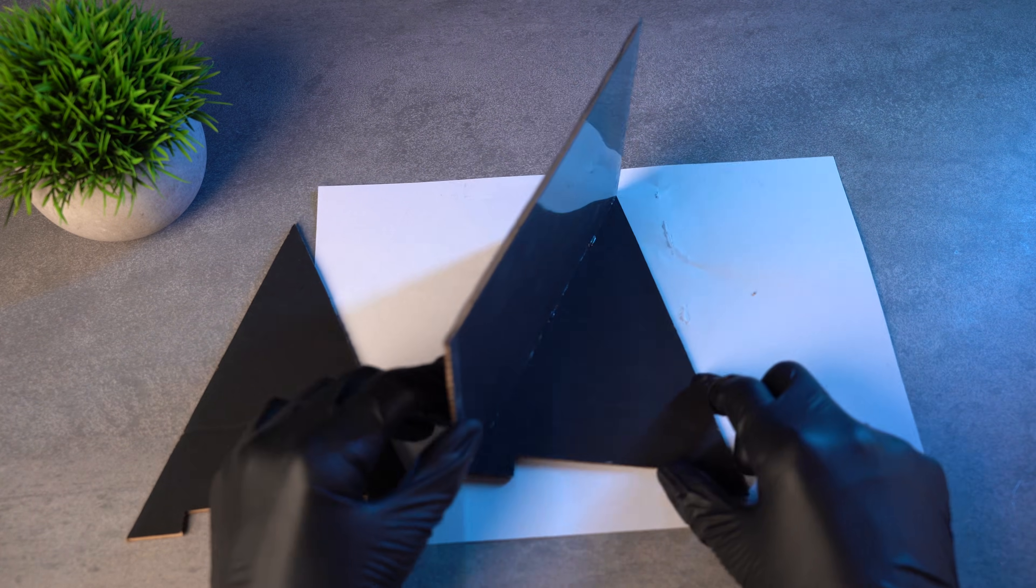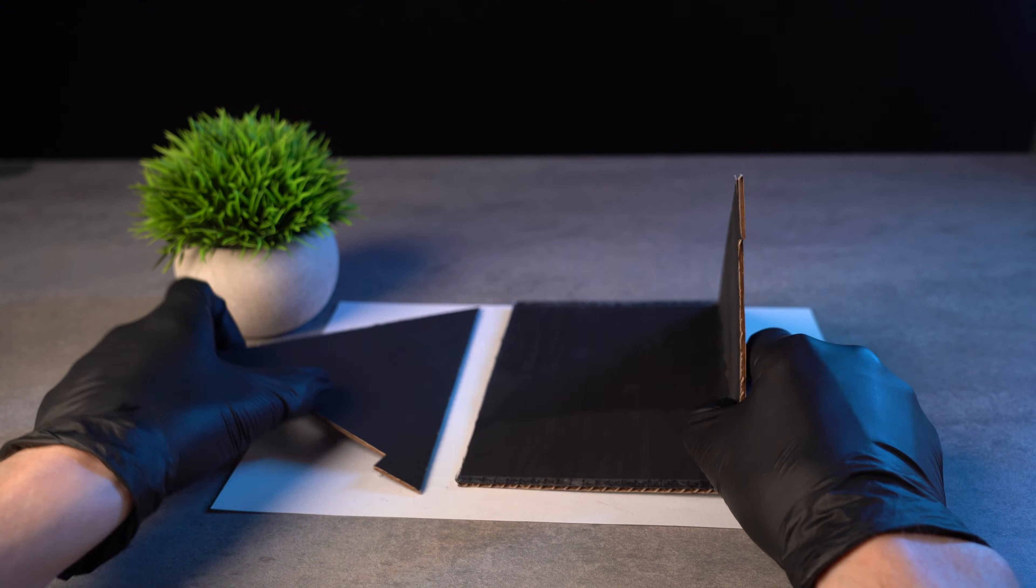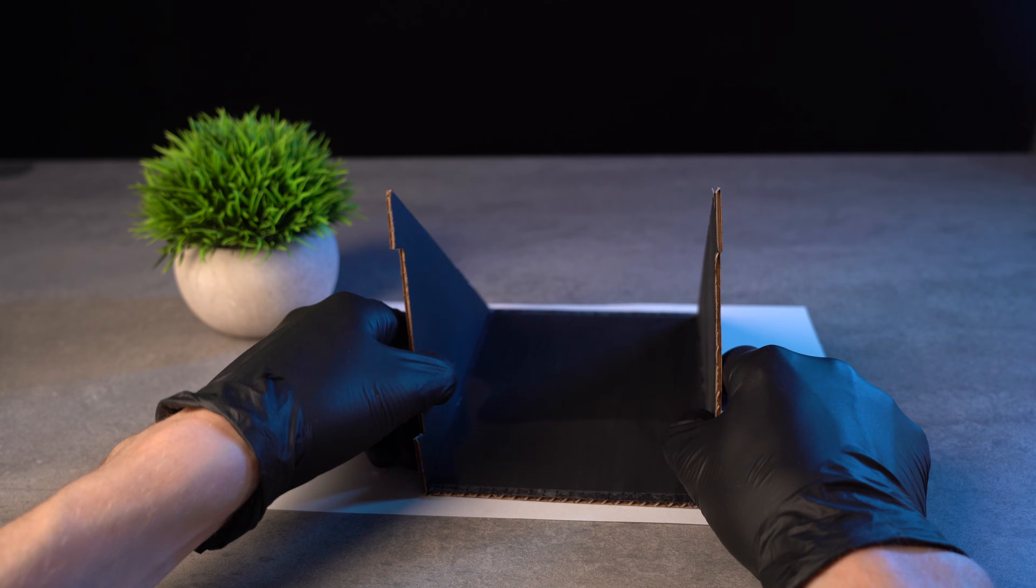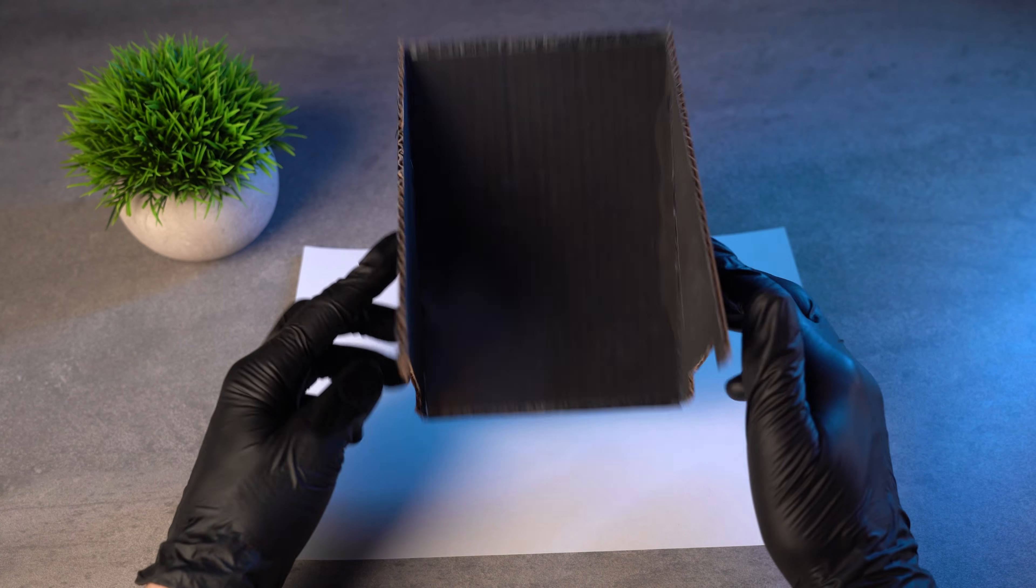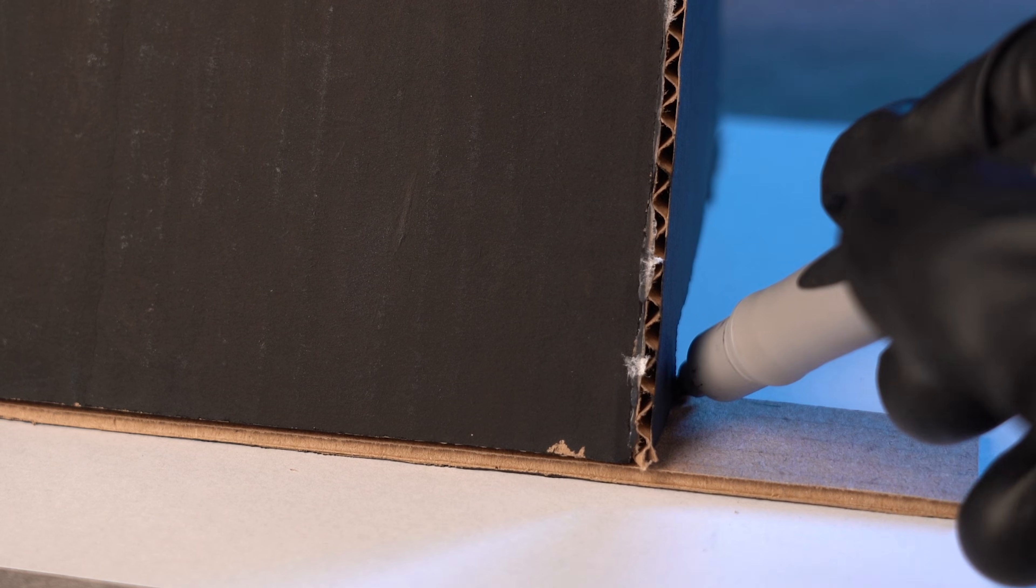Now I flip the whole thing over, apply glue to the other side, and attach the second triangle. Good! Now let's trim the strips to the right length. I place one like this and mark it with a marker.